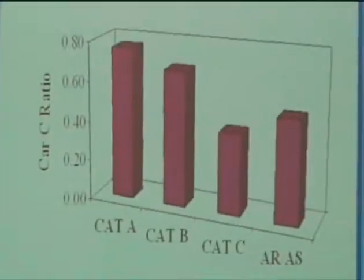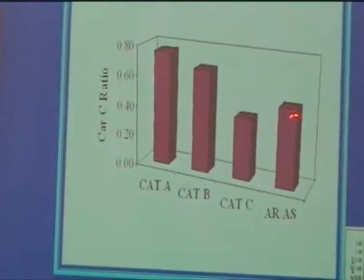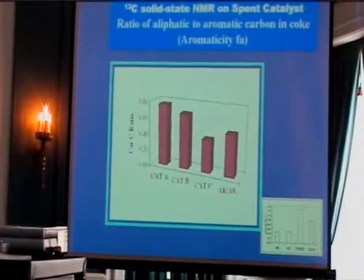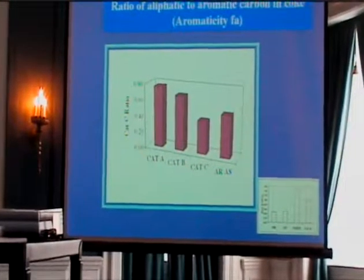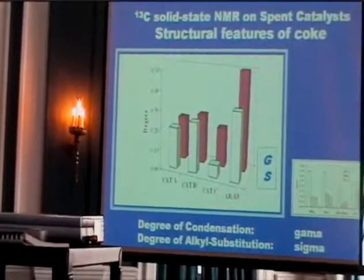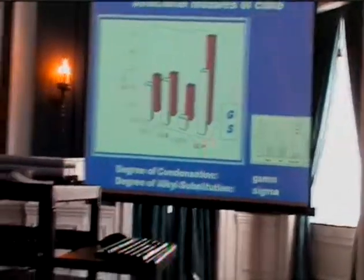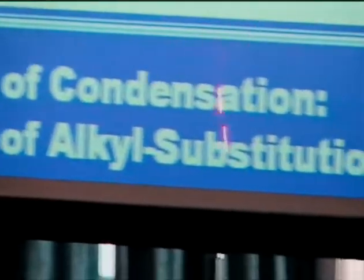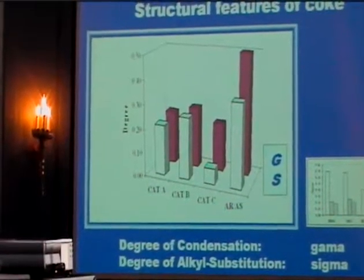In order to further obtain information about the aromaticity of the coke, NMR was used. This figure shows the aromaticity of the coke for different catalysts A, B, C, and also the aromaticity of the original asphaltene in the feed. The lowest aromaticity was found in catalyst C, which is not a surprise since catalyst C has higher hydrogenation activity. The degree of condensation and degree of alkyl substitution were also found to be lower in the case of catalyst C, even lower than the original asphaltene.